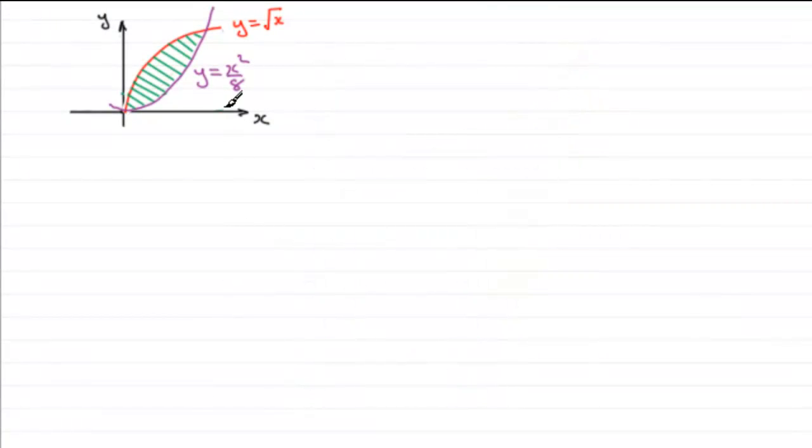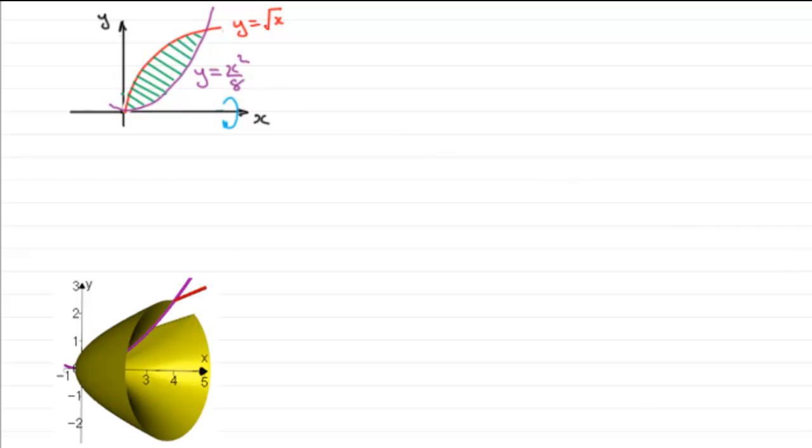Now to generate the volume what I did was to take an area enclosed between the curve y equals x squared divided by 8 and y equals the square root of x, and I took that area and revolved it about the x-axis.